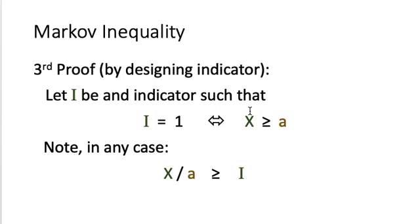We check two cases. When X ≥ a, I equals 1, and X/a is some value greater than or equal to 1, so X/a ≥ I. When X < a, I equals 0, but since X takes only non-negative values, X/a is still a non-negative value, so X/a ≥ 0 = I. In both cases, X/a is greater than or equal to I.